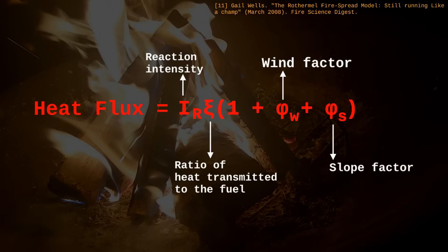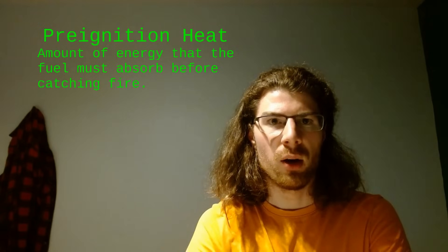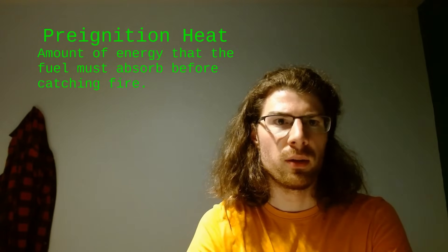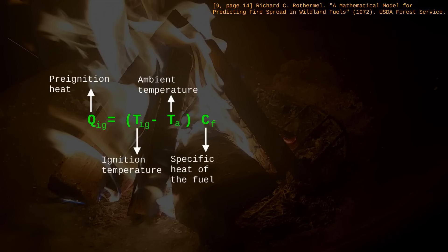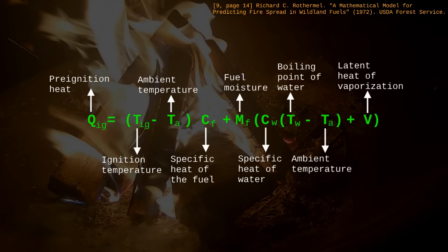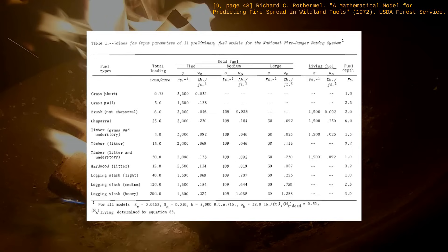The other term we have to determine is the pre-ignition heat — that is, how much energy the fire must transmit to the fuel before it catches fire. We can calculate it by taking the difference between the ignition point of the fuel and the ambient temperature, and multiplying the difference with the specific heat of the fuel, that is, how much energy it needs to increase its temperature. But we also have to consider the moisture content of the fuel. This leaves us with a pre-ignition heat equation that comprises some parameters. We can go on-site to sample the fuel and determine these variables, but we can also use charts that list them for well-known fuel types.